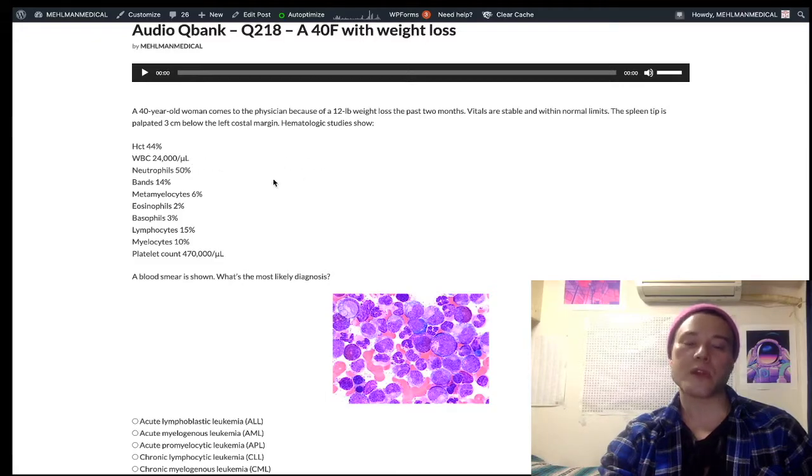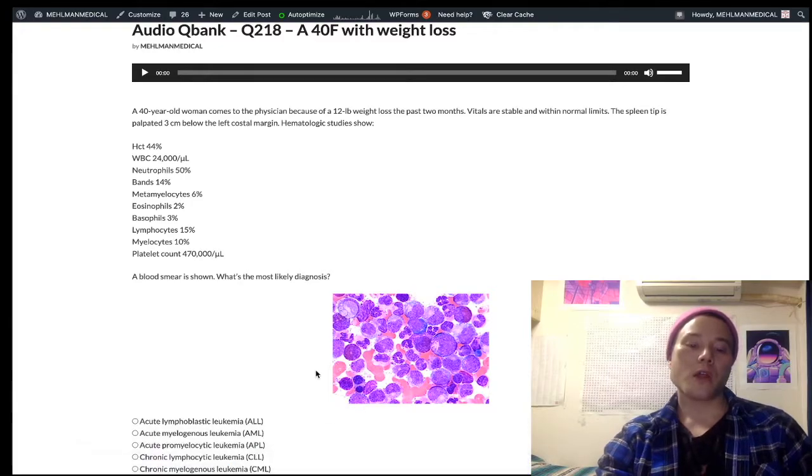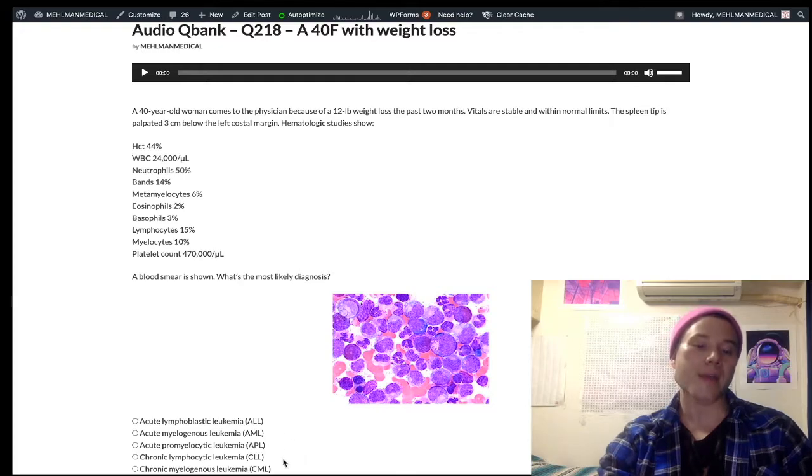But if you're higher than that, you're definitely leukemia on USMLE. Now this one, 24,000, so you're down in the territory of infections, severe infections, but the rest of the vignette gives it away for leukemia, let alone the fact all of our answer choices here are leukemias. So now we look at the white blood cell breakdown. Literally, myelogenous leukemia, CML or AML.